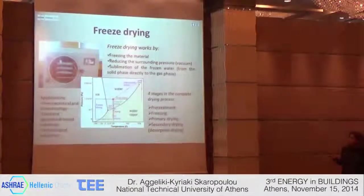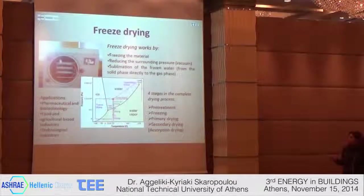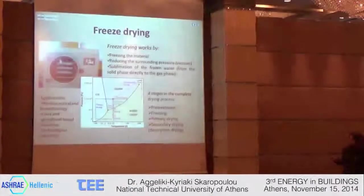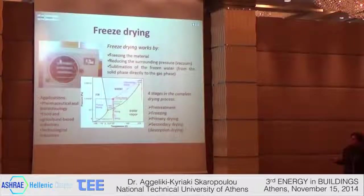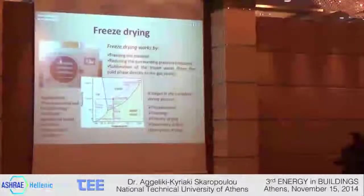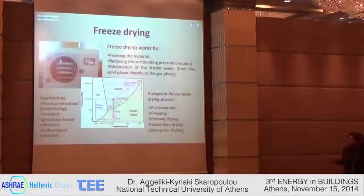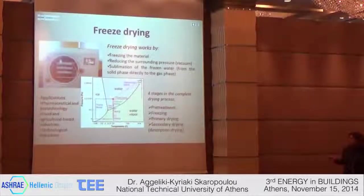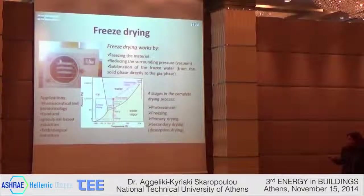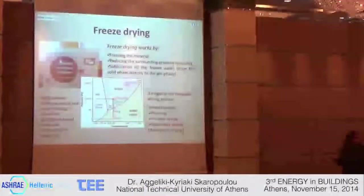This is the freeze dryer that we have at our lab, and here you can see how freeze drying works. At the beginning, following the blue arrow, we have to freeze the material, then reduce the surrounding pressure by applying vacuum, and then we sublimate the frozen water — the water passes directly from the solid ice phase directly to the gas phase. This process goes around the triple point, avoiding the direct transition from liquid to gas phase.